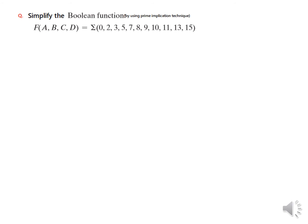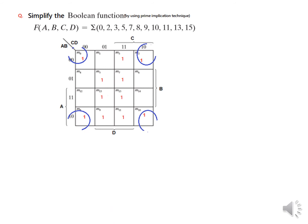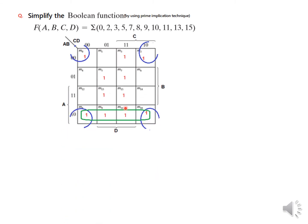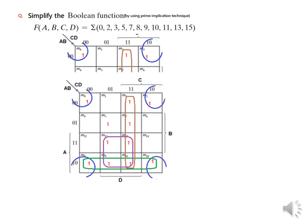Now let us look at the question given in the book. We will simplify the Boolean function using prime implicant techniques, given the main terms. First we plot all the main terms, then we find the prime implicants covering maximum numbers. We do not have an option of eight, so we find all groups of four. The first option covers the four corners.